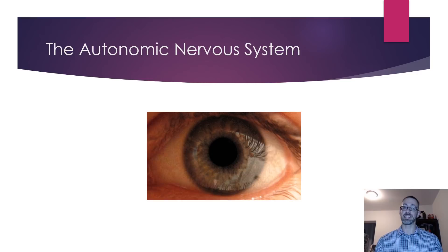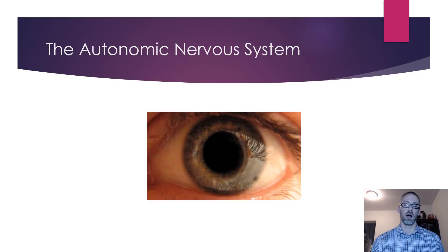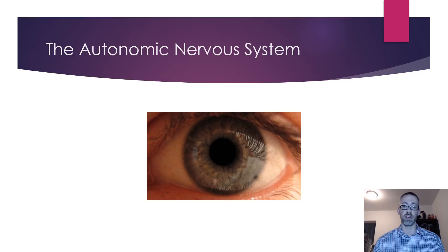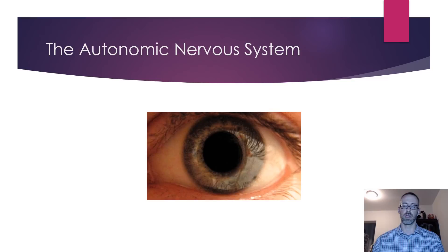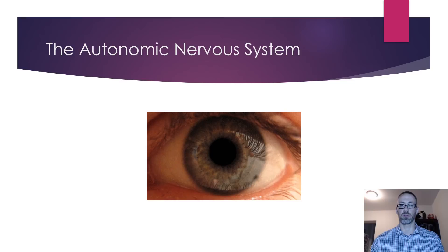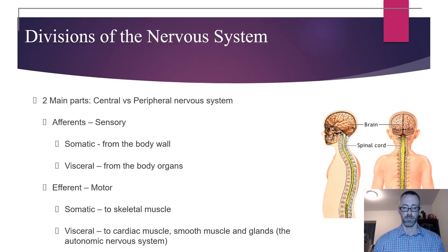An example is the pupil: the iris controls dilation and constriction in response to light. In a dark room the pupil dilates to let in more light; shine a light in the eye and it constricts. This is a response of the autonomic nervous system. Dilation of the pupil is a sympathetic response; constriction is the parasympathetic response. These two divisions of the ANS regulate many different reflexes within the body.